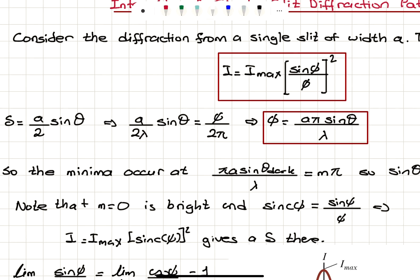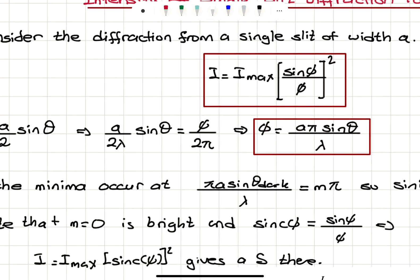Path difference divided by the wavelength is equal to phase difference divided by 2π. So the phase difference between the two rays reaching the screen will be φ = πA sinθ / λ. These are rays coming from the upper and lower half interfering, so we're looking at the phase difference between the two, and this phase difference is what appears in the intensity expression.